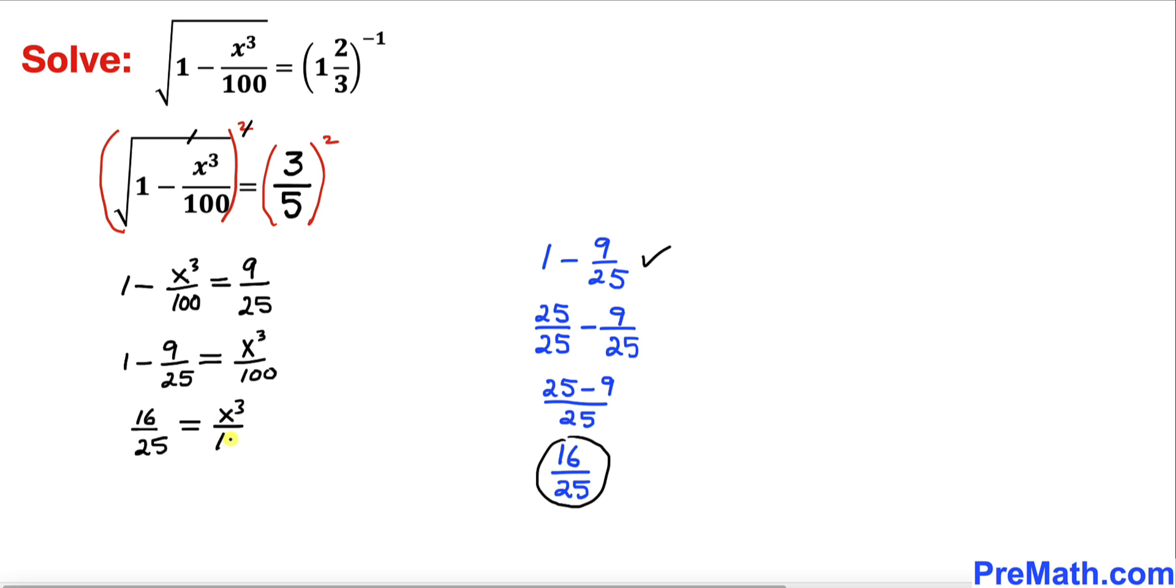Now let's multiply both sides by 100 to isolate x cubed. Here 100 and 100 cancel each other out, and on the left hand side 25 goes into 200 four times. Therefore x cubed equals 64.